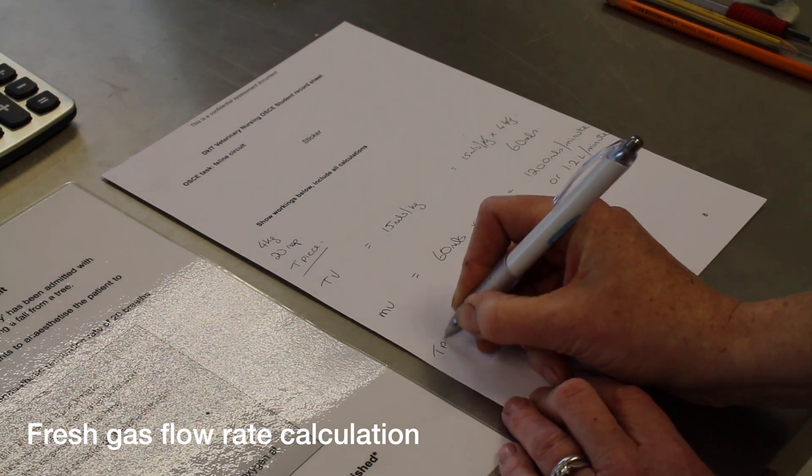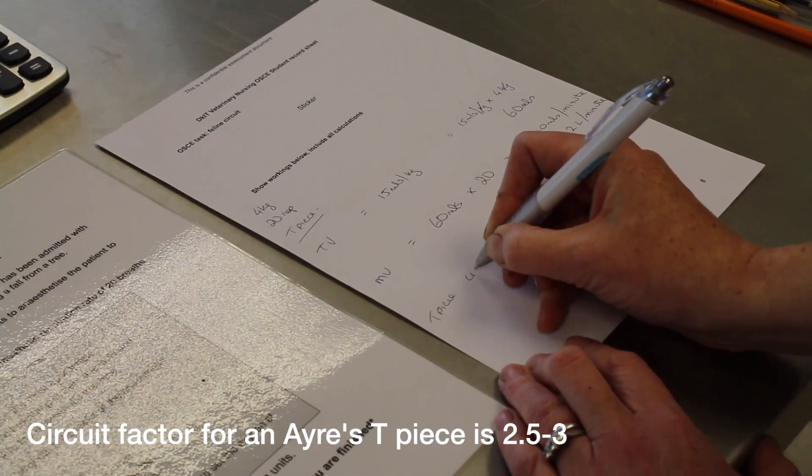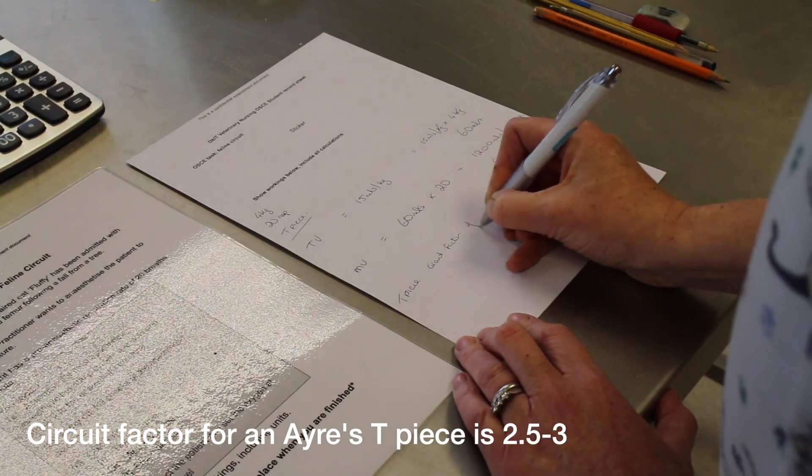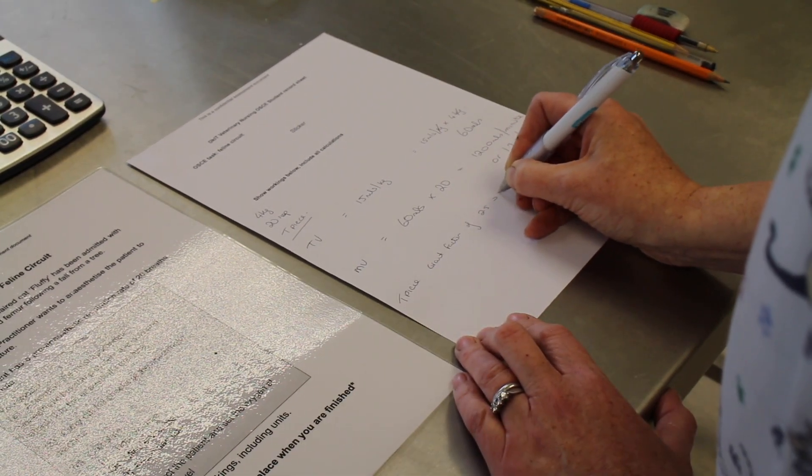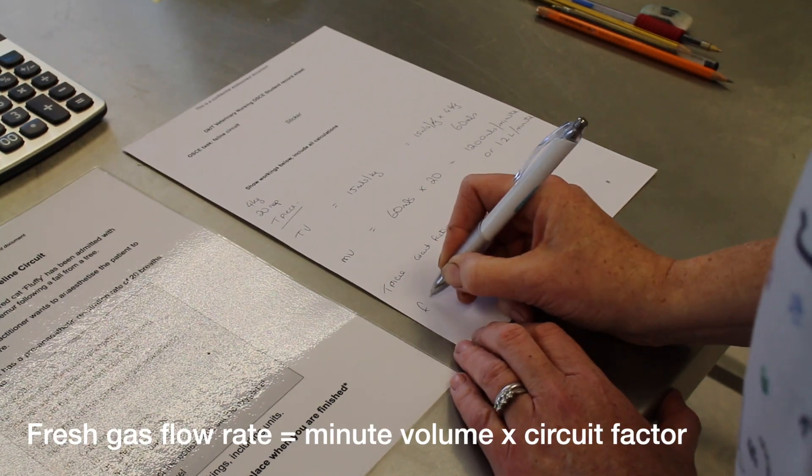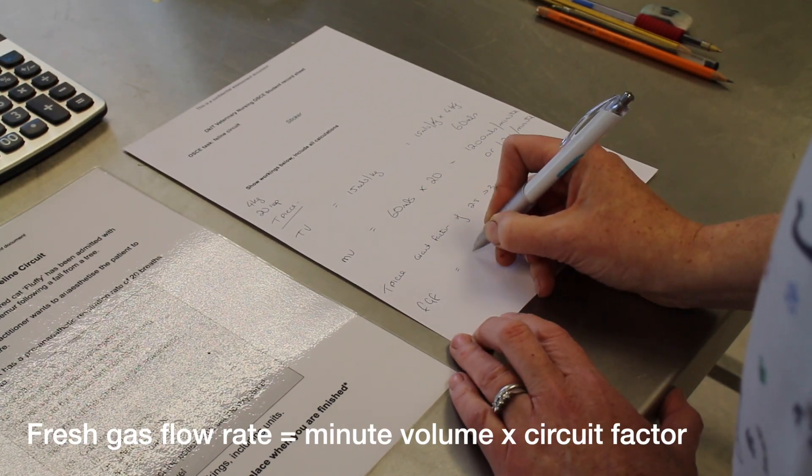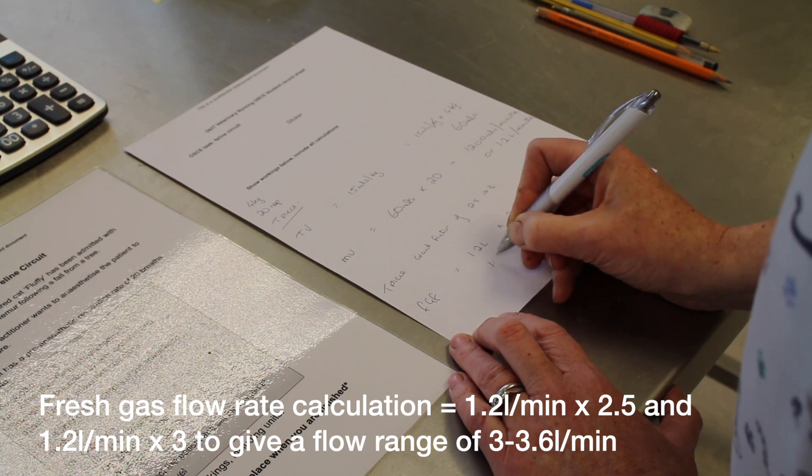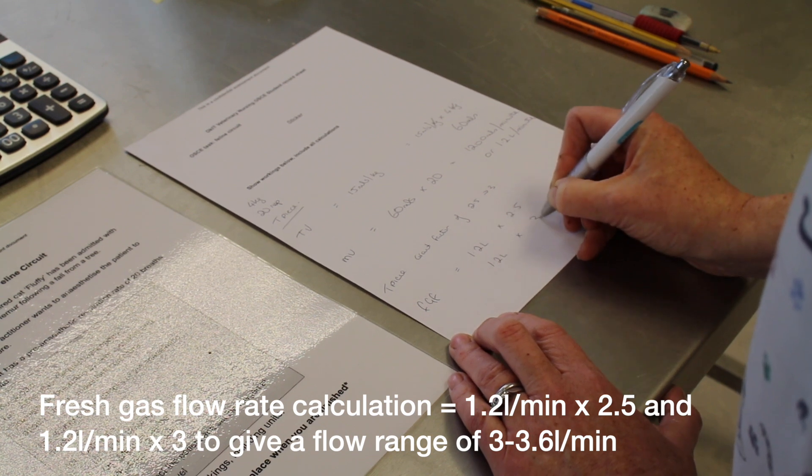So for our T-piece, we have a circuit factor from 2.5 to 3. So our fresh gas flow is 1.2 liters multiplied by 2.5 and 1.2 liters multiplied by 3.